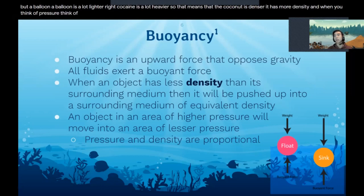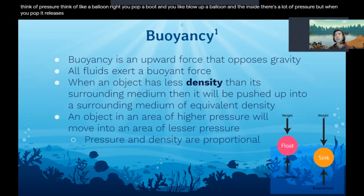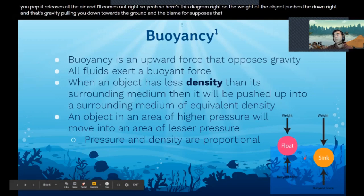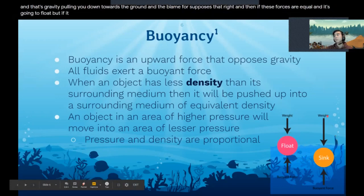When you think of pressure, think of like a balloon. You blow up a balloon and the inside, there's a lot of pressure. But when you pop it, it releases all the air and it all comes out. So here's this diagram - the weight of the object pushes it down, and that's gravity pulling it down towards the ground. Then the buoyant force opposes that. If these forces are equal, then it's going to float. But if gravity is stronger than the buoyant force, then it gets pulled down.